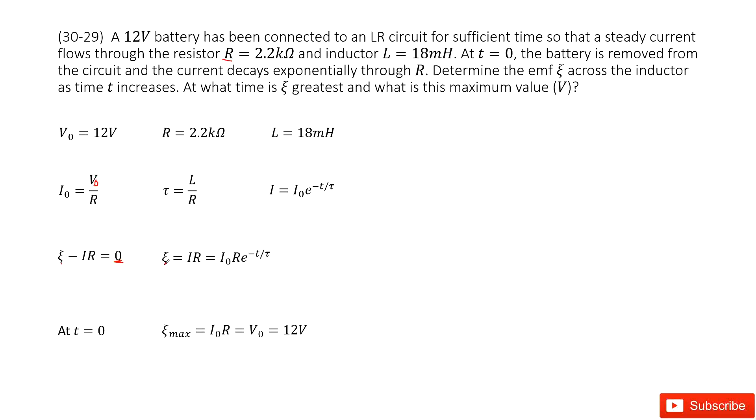Now we can write epsilon as I times R. Input I inside. We can see in which case this term will reach the maximum. Of course, at t equals zero, this term just becomes one. So now this becomes I₀ times R.